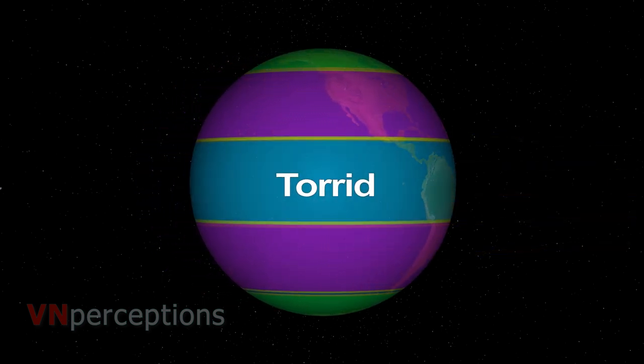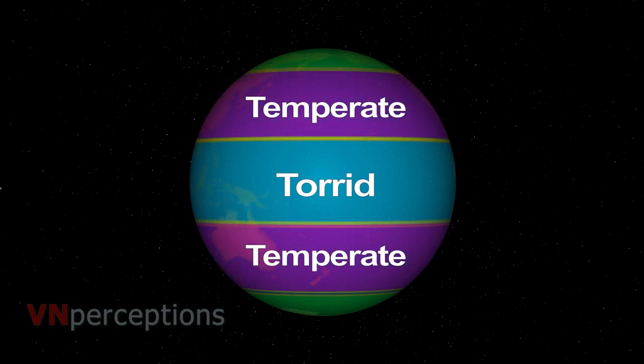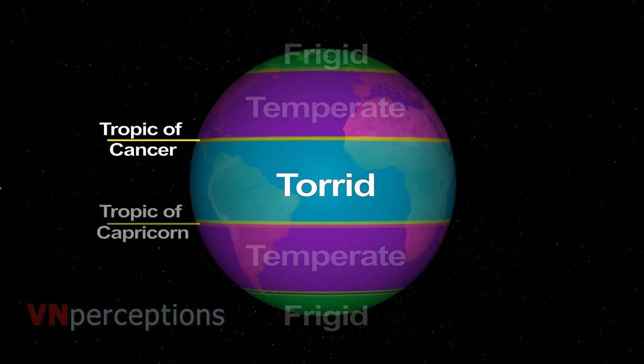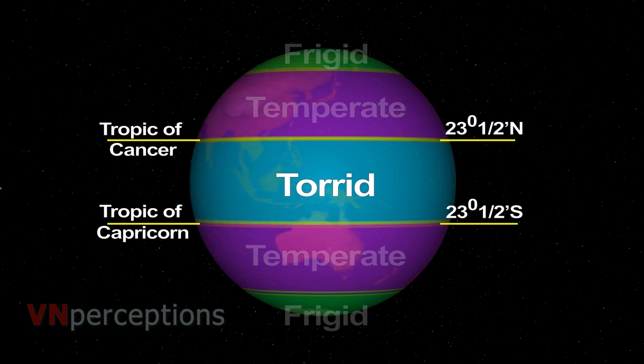They are torrid zone, temperate zone and frigid zone. The torrid zone or the tropical zone lies between the tropic of Cancer and tropic of Capricorn. Tropic of Cancer is at 23 and a half degrees north and tropic of Capricorn is at 23 and a half degrees south. Torrid zone receives nearly vertical rays of the sun throughout the year and receives vertical rays of the sun two times in a year.